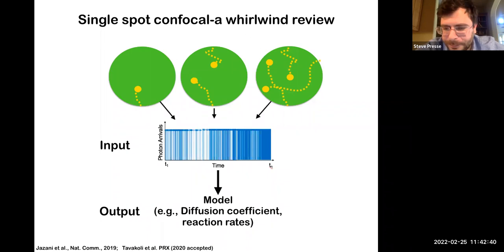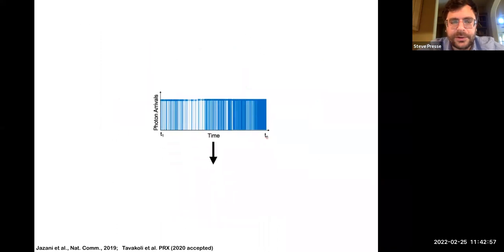And presumably the number of photon arrivals correlate with the number of molecules within the spot at that moment in time. They also correlate with where the molecule is located with respect to the center of that spot, because remember, the center of the spot is the brightest location. And the goal, going back to Laplace's picture of starting off with data and inferring the cause, is to learn the diffusion coefficients and possibly even reaction rates of molecules as they react, as they traverse through that volume.